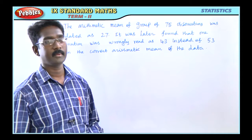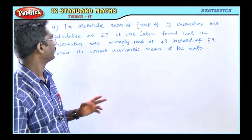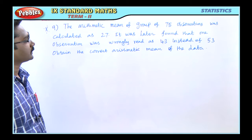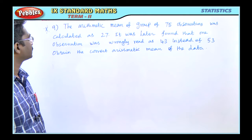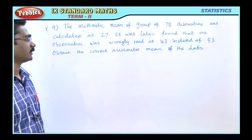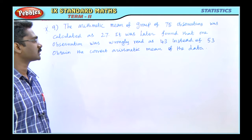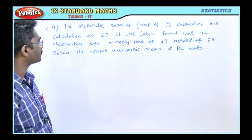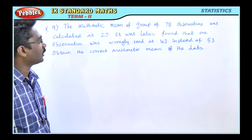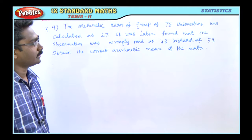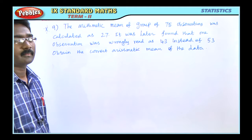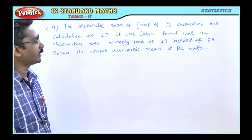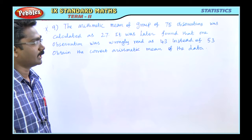Question number 9, a very important problem. The arithmetic mean of a group of 75 observations was calculated as 27. It was later found that one of the observations was wrongly read as 43 instead of 53. Obtain the correct arithmetic mean of the data.